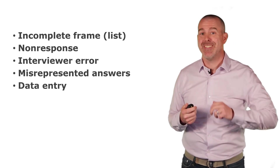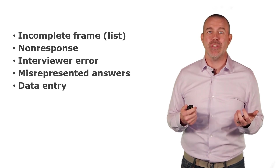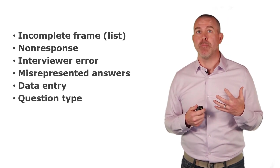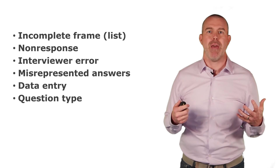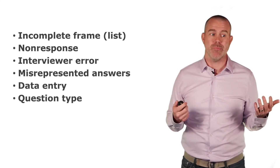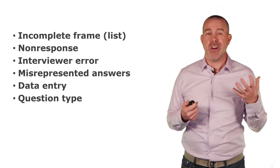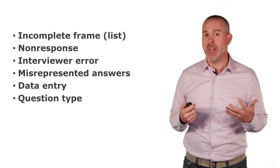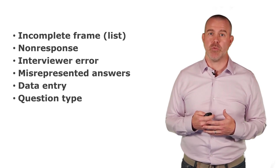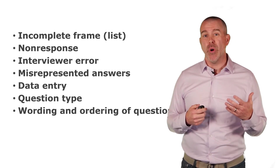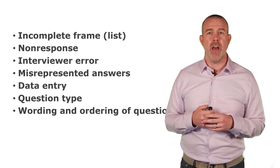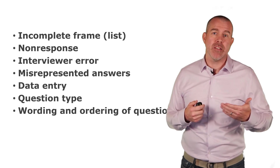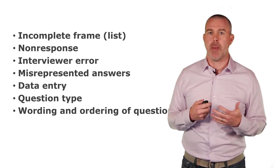Next is data entry — just entering data into a database, where something could simply be typed in wrong. Then there's question type: if you ask people's favorite band and list only five options, their band might not be there — that's a closed question versus an open question, and the question type can create bias. Finally, the wording and ordering of questions can create bias where people aren't able to respond in an authentic manner.